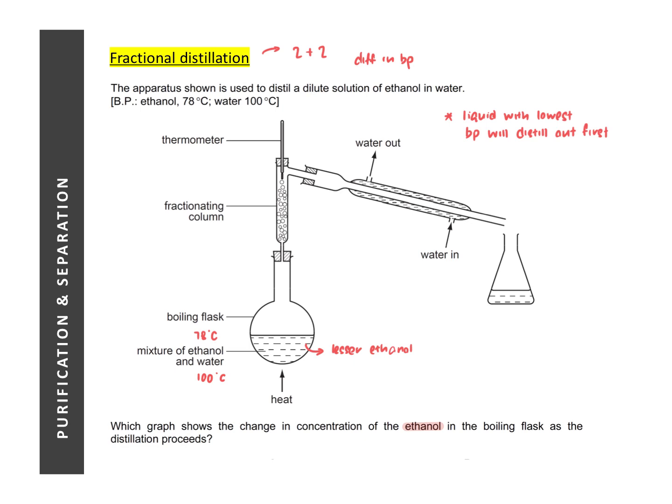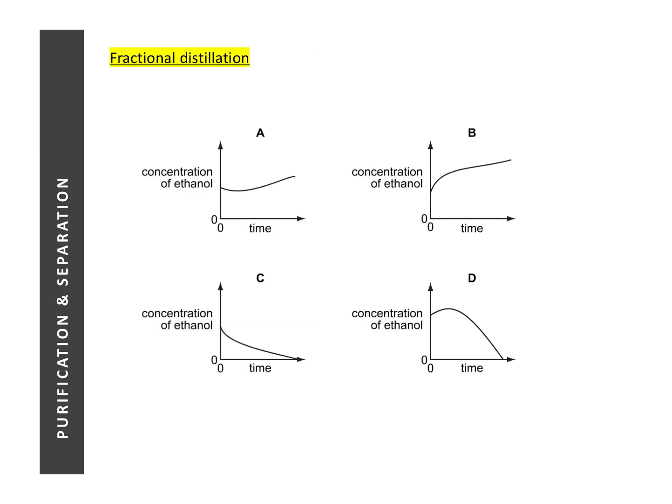So we are supposed to look for, this is an MCQ question, we are supposed to look for an option that depicts that. So again, as mentioned, ethanol is the lower boiling point liquid. So it will be distilled first. So the concentration of ethanol in the boiling flask would decrease over time until it reaches zero. So the correct answer over here would be C.